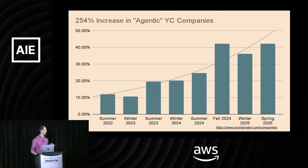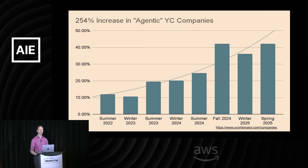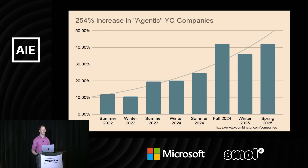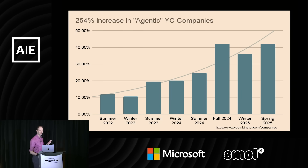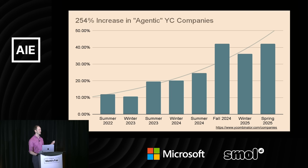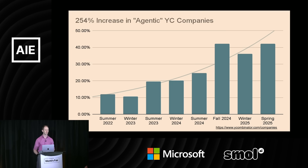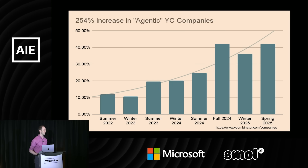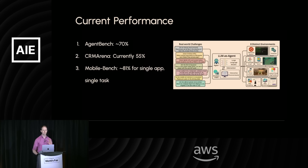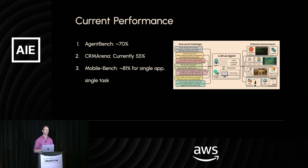There's a tremendous amount of excitement happening here. Just to take one data point: if we look at companies accepted to Y Combinator over the last three years, we've seen a 254% increase in companies describing themselves as agentic or as building agents. We're certainly seeing a lot of increased investment and excitement. But I think we're also seeing that these are really hard problems we're going after.